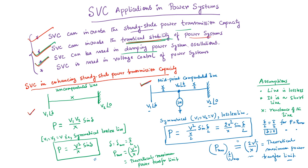The next application is that SVC can also be used in damping of power system oscillations. In order to understand damping of power system oscillations, you have to understand what is meant by power system oscillation and why we require damping in a power system. In this particular lecture, I will discuss how an SVC can be used in damping power system oscillations, the significance of power system oscillation damping, and how it can be done using SVC control.